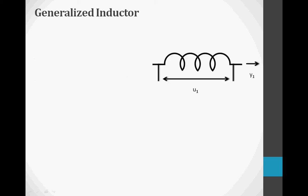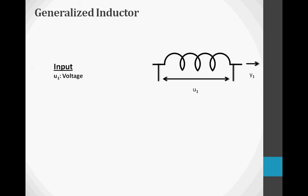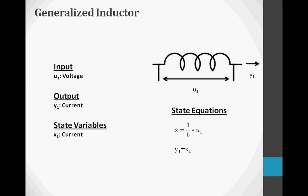To model an inductor with state space equations, the input is U1, voltage. The output, Y1, is current. The state variable would then be X1, which is current. The state equation derived from this system would be X dot equals 1 over L times U1. The output for the system is Y1, which is also equal to X1.